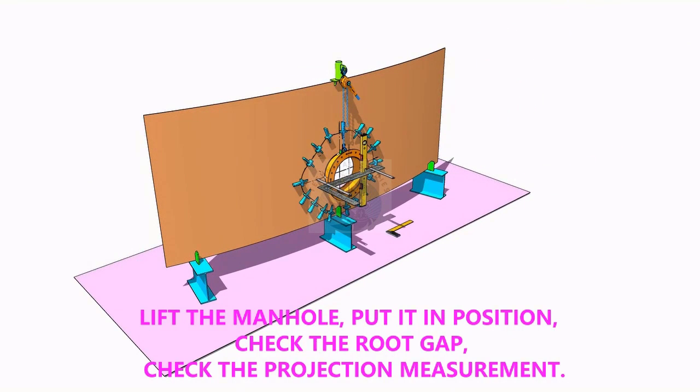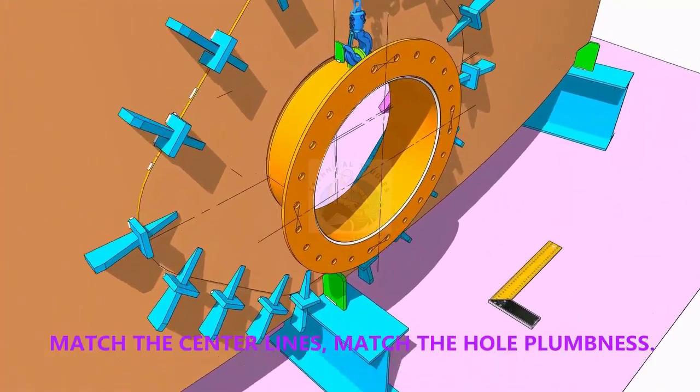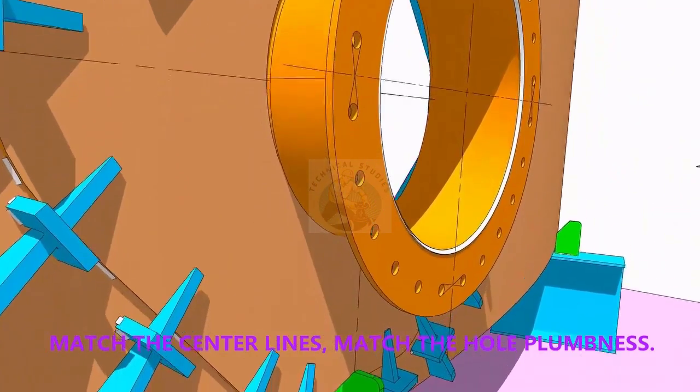Put the manhole in its position. Correct the plumbness. Correct the projection of the manhole. Correct the gap. Check again the plumbness.